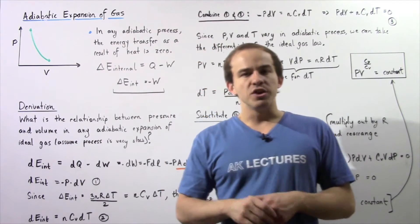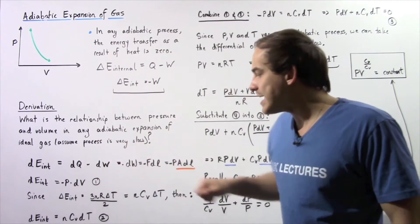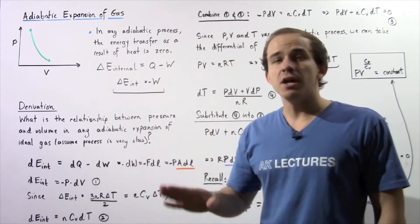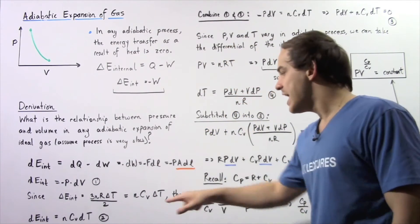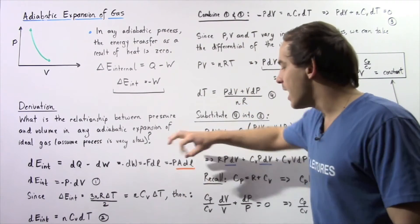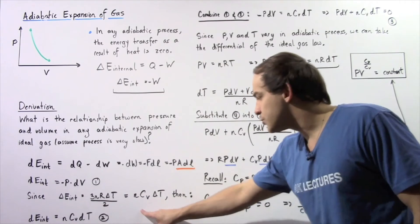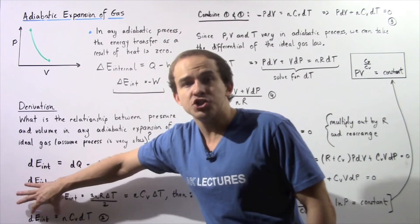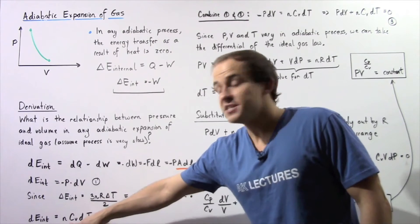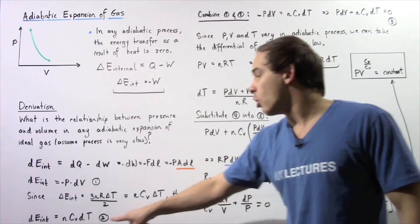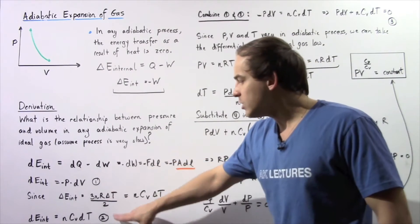Because we're dealing with a monatomic ideal gas, the change in internal energy equals n times Cv times dT, where n is the number of moles and Cv is the molar specific heat at constant volume. So the infinitely small change in internal energy equals n times Cv times dT. We call this equation two, and we will now combine equation one with equation two.